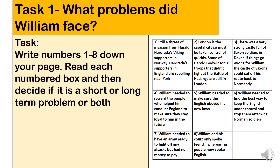Task one: what problems did William face when he became king? On the right-hand side you'll see a table with boxes one to eight identifying problems William faced when he became king of England in 1066. Write one to eight down the side of your page, then we're going to read each box and decide whether it is a short-term problem — something William can deal with fairly quickly — or a longer-term problem that will take more time to solve. Let's do the first two together. Box one: there was still a threat of invasion from Harold Hadrada's Viking supporters in Norway, and Hadrada's supporters in England are rebelling near York.